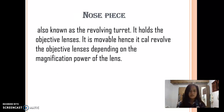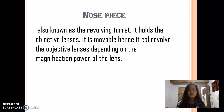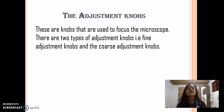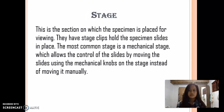Nosepiece, also known as the revolving turret — it holds the objective lenses. With its movable design, it can revolve the objective lenses depending on the magnification power of the lens. The adjustment knobs — these are knobs used to focus the microscope. There are two types: fine adjustment knobs and coarse adjustment knobs.